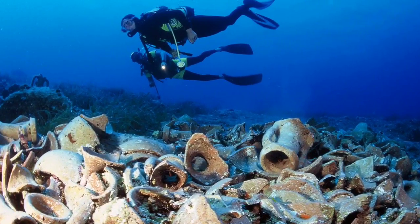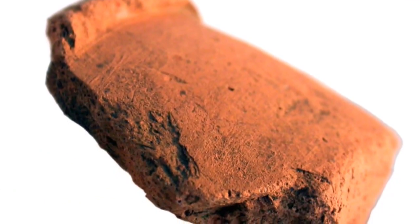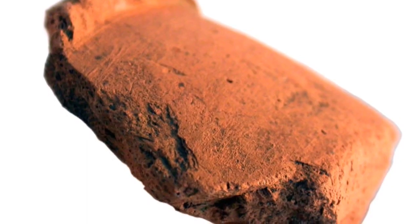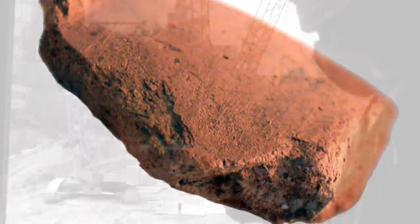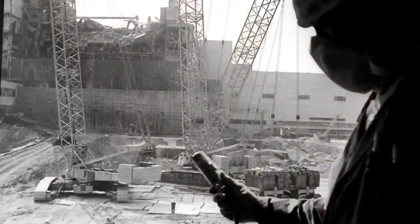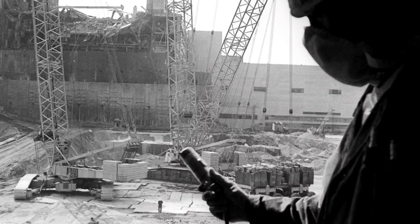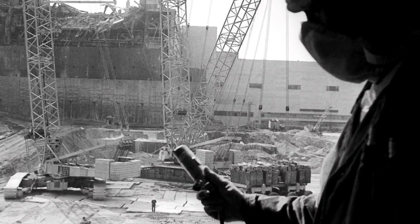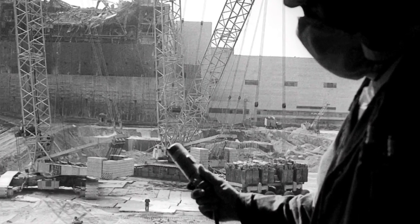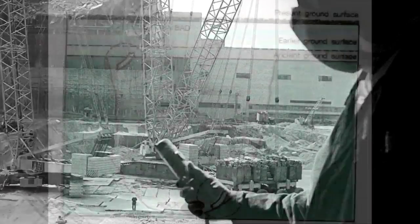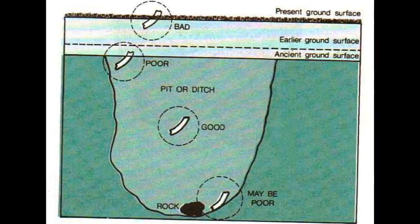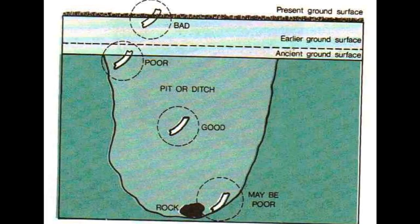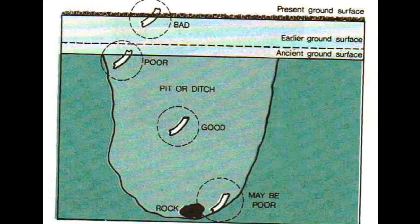Also, radiation can be emitted from elements found within the pottery itself, so very careful measurements must be taken from all potential sources of radiation. It's also better if an object is found within a uniform environment — i.e. in the center of a context where the dose will be more stable than on the edge of the context.